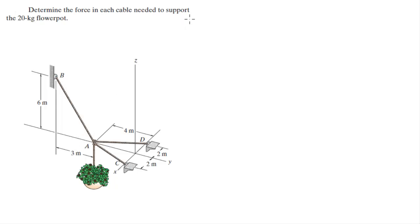The first thing we need to do is find the unit vectors. There are four of them: the one for the flower pot going straight down, the one going towards C, the one going towards D, and the one going towards B.